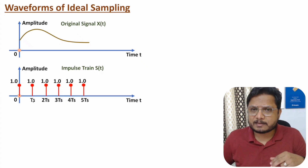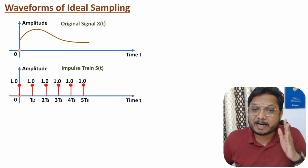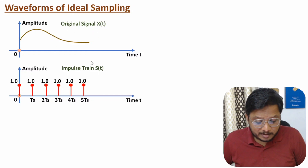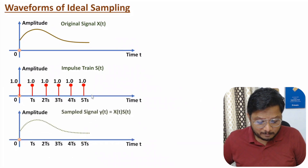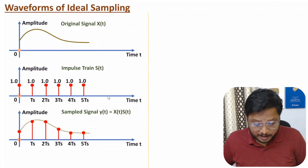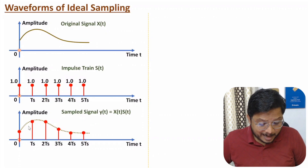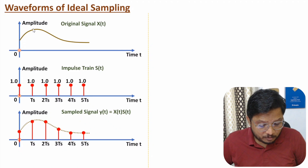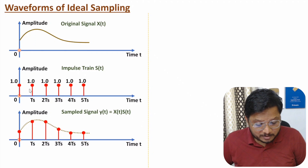The spacing Ts means sampling frequency fs equals 1/Ts. In ideal sampling, we multiply the original signal with the impulse train, so the output signal y(t) is the multiplication of x(t) and s(t). At t = 0, multiplying the impulse train with the original signal gives a certain amplitude. At t = Ts, multiplying gives another amplitude. Likewise, when you multiply the impulse train with the original signal, you get the sampled output.